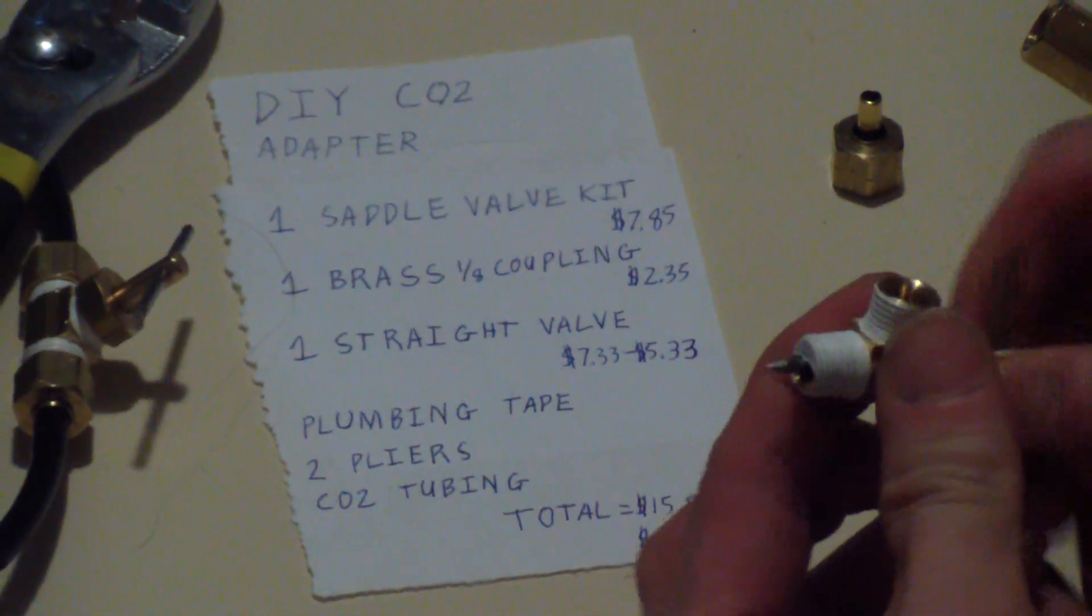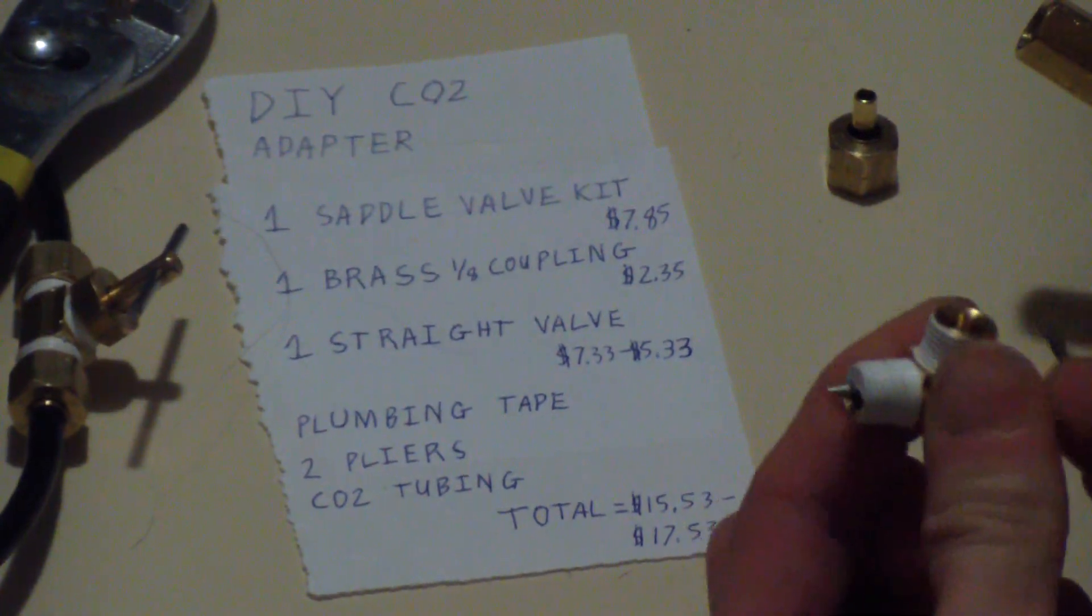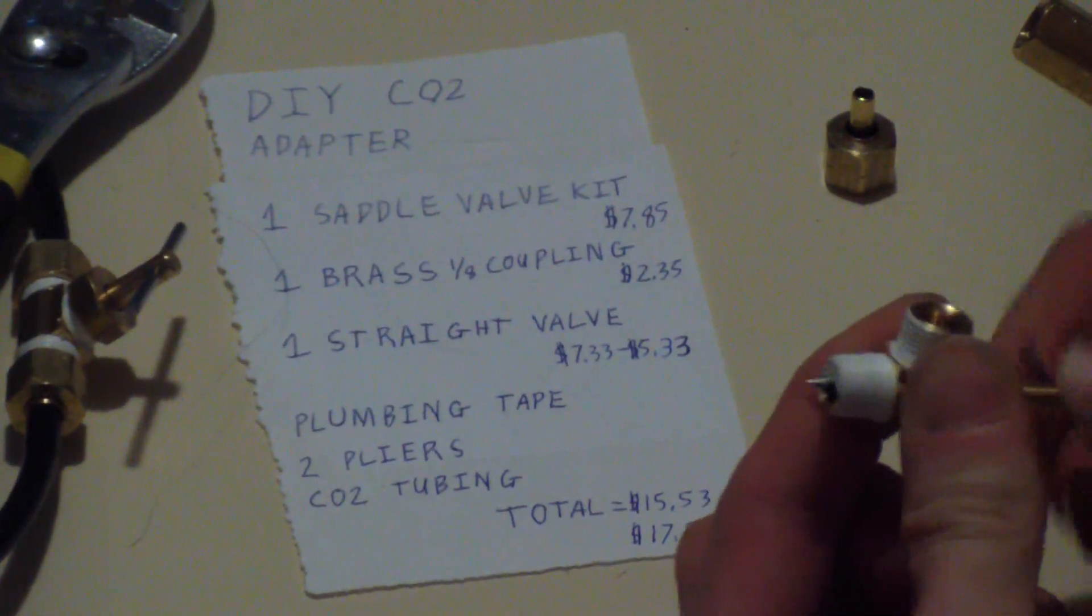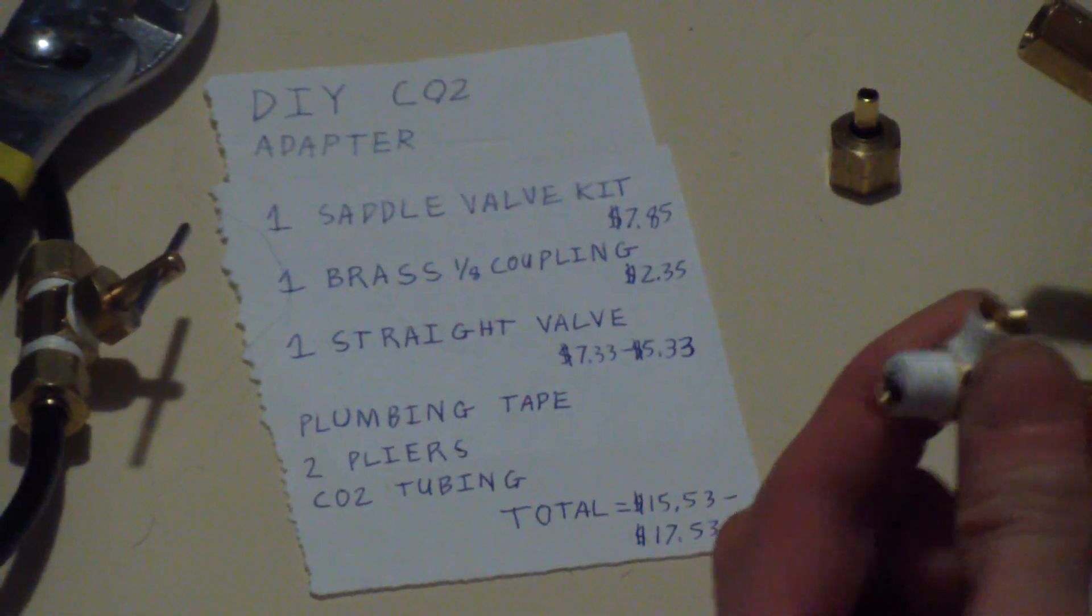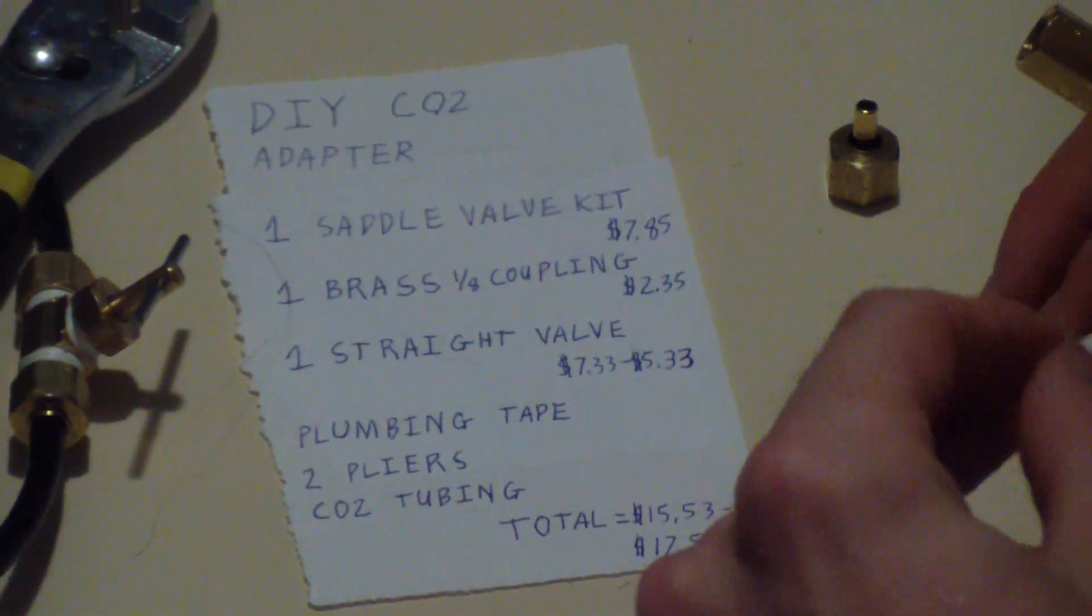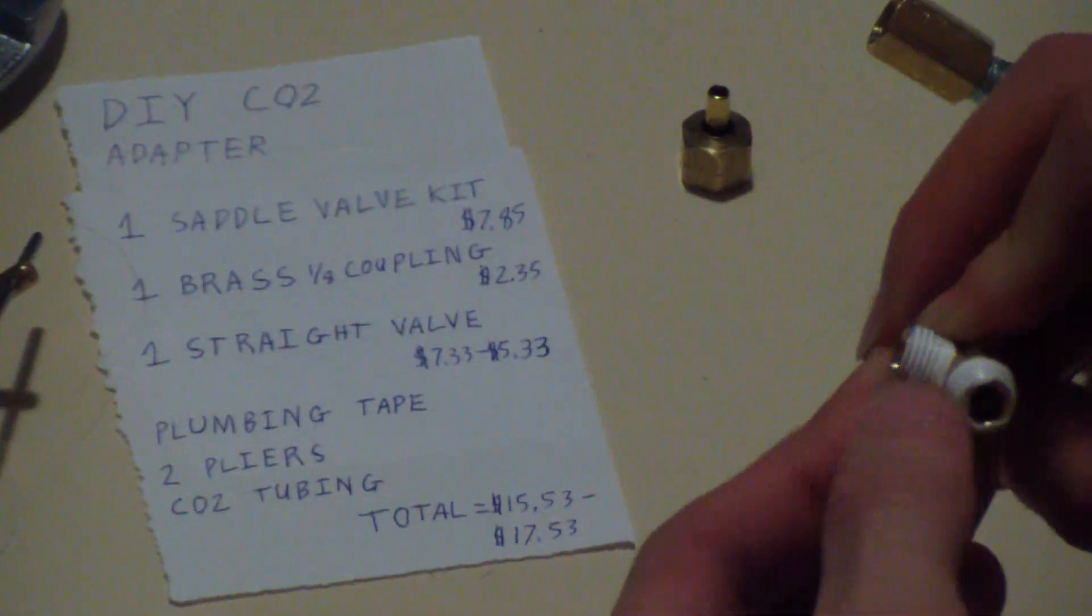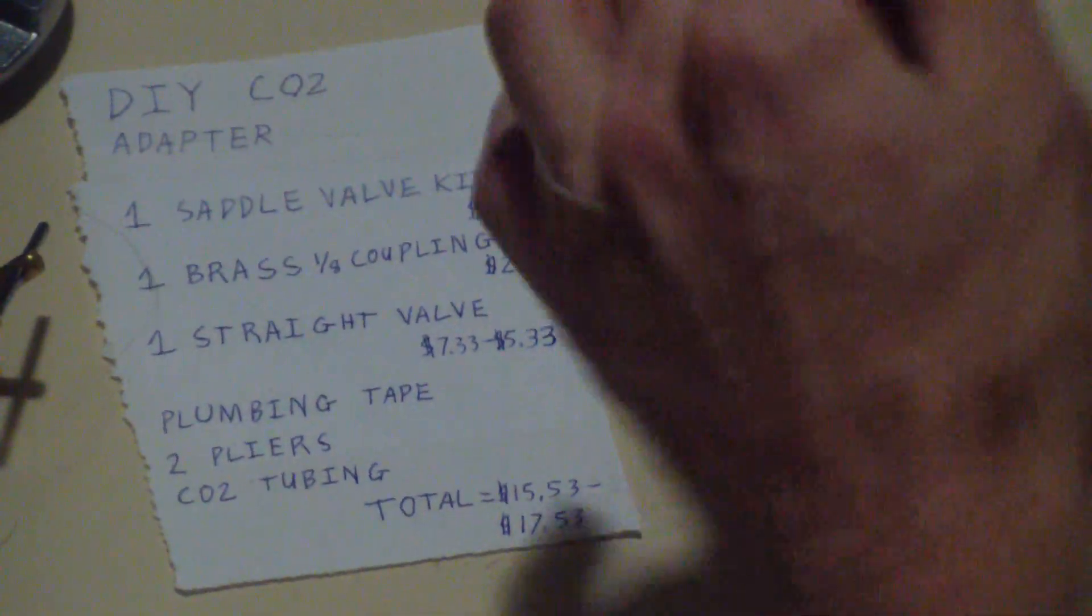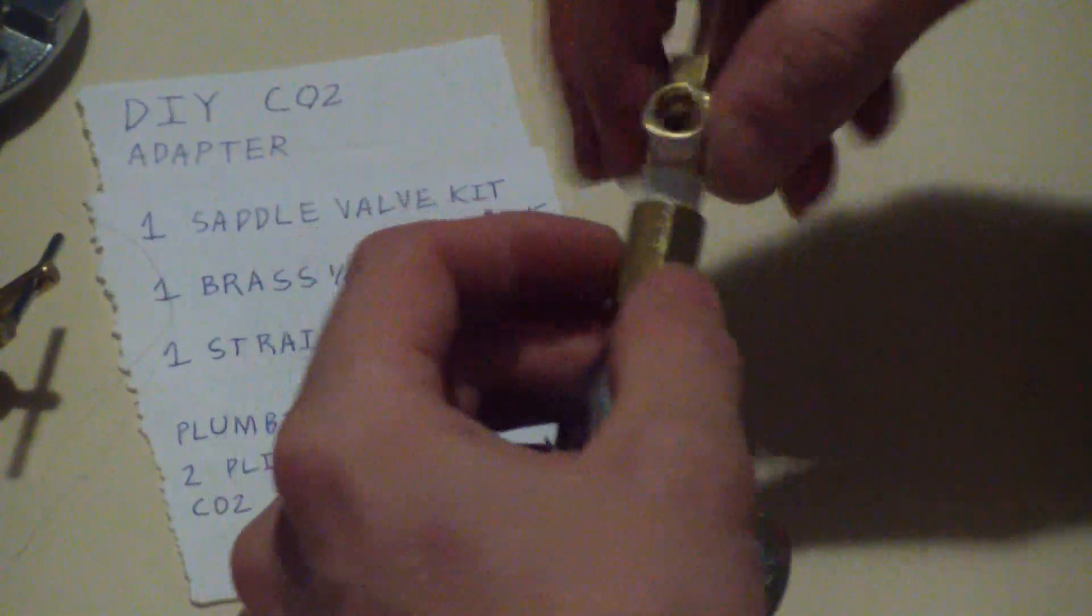On this piece, make sure that you back this all the way back. You don't want to pre-puncture your cylinder. That would be very bad. Once you've got it backed in there, make sure that your plumbing tape is not blocking the hole and feed it in there.